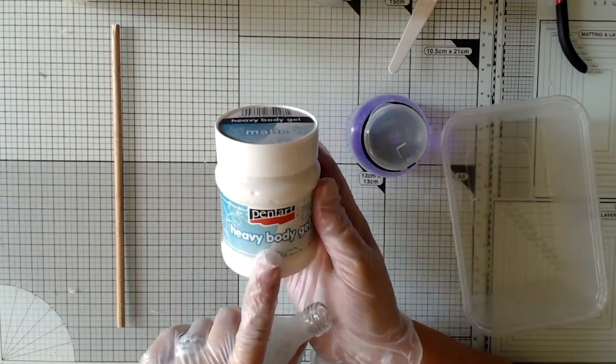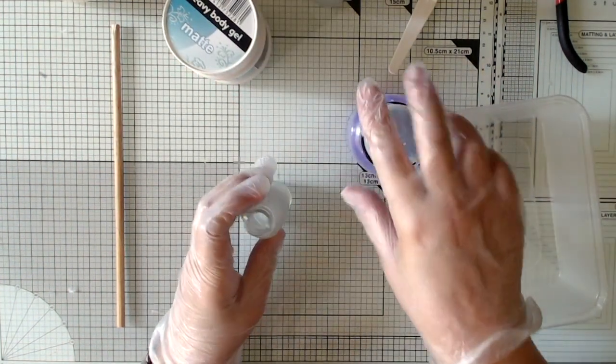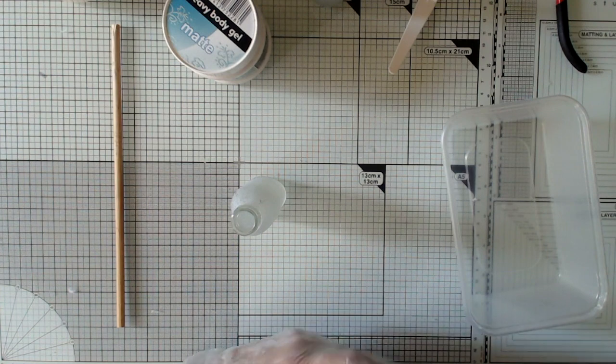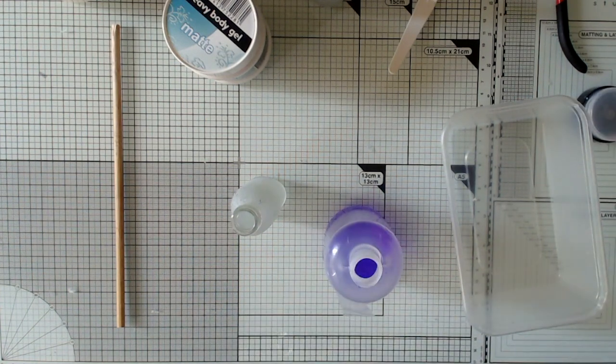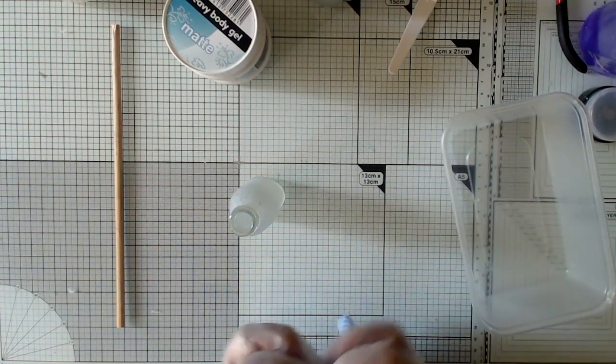And the next step is to give it some texture. I'm going to be using this heavy bodied gel. It's matte, and so that it sticks really, really well, I'm going to just clean the surface of my bottle with some alcohol.